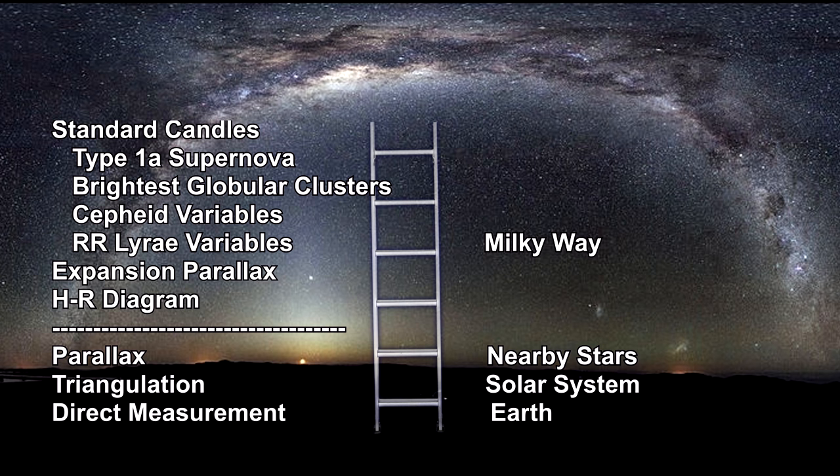Astronomers used the Cepheids and other known standard candles to verify and calibrate these two new standard candle rungs on our cosmic distance ladder: Type Ia supernova and the brightest globular clusters.